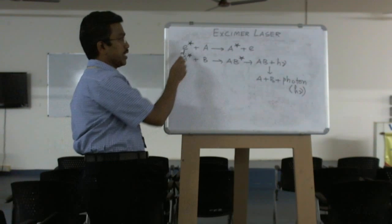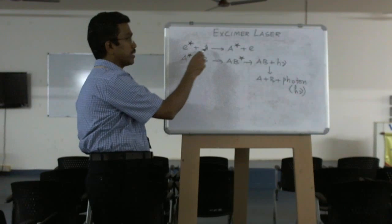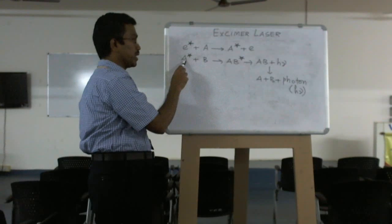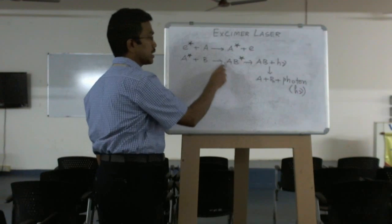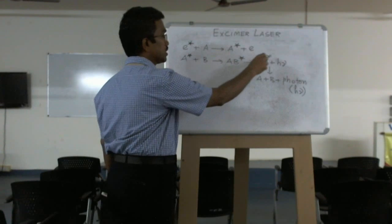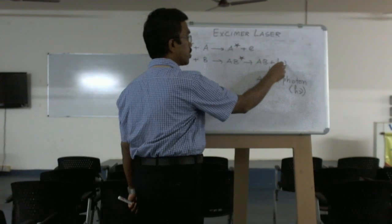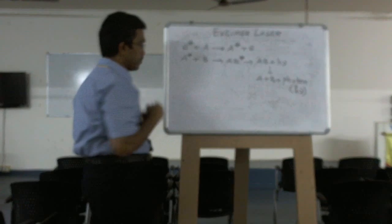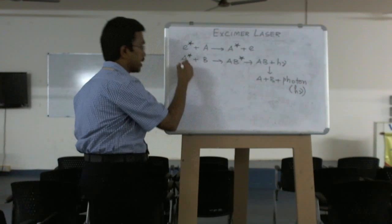Here we need electrical discharge as the pumping mechanism, plus A and B. Those are called mixture of gases - one is a noble gas, another one is a halogen. To become an excited state of mixture of gases, then it will go to the ground state of noble gas by emitting photons. You can see the energy level diagram. It will be like this.